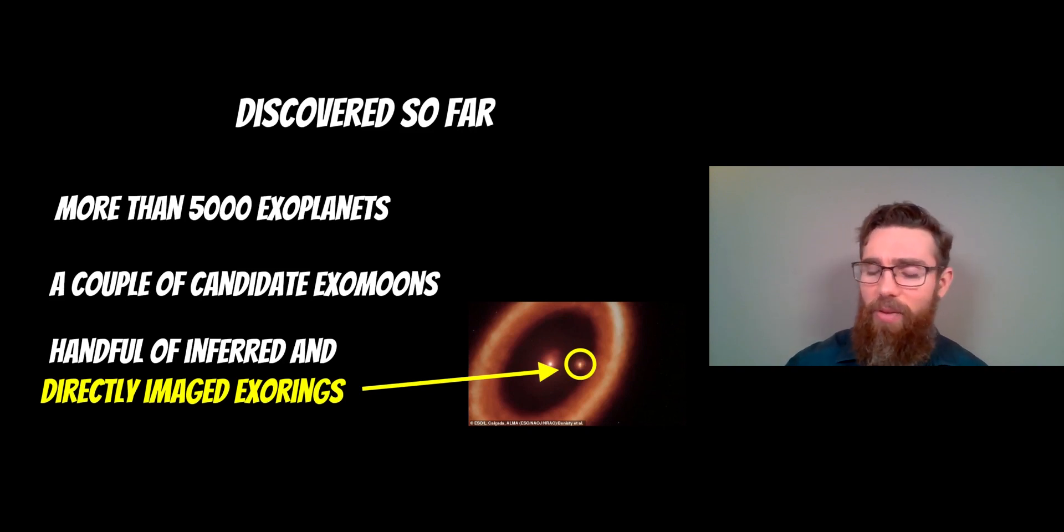But on the right there, you've got an image of a potential exomoon forming ring or disk around a very young planet. So this planet is orbiting its star, which is in the center. You've then got a ring of material around that because it's still in the planet forming process. And then that young planet has got material orbiting it. And that would be referred to as an exo ring. But also you could have moons forming in that.